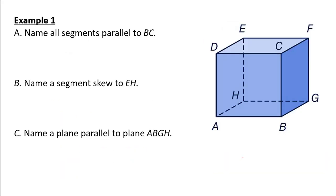Our first example: Name all segments that are parallel to BC. So all segments that are parallel to BC here, so I have FG, EH, and AD. I look at it like kind of the edges going around my box.